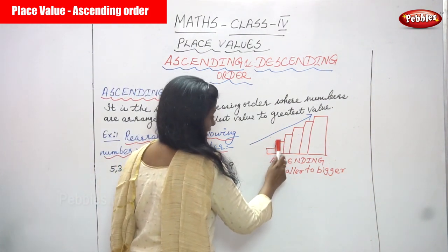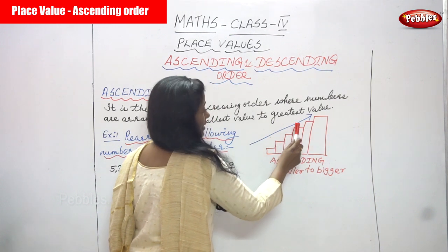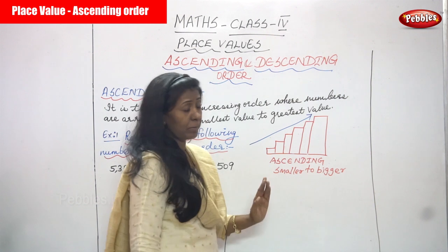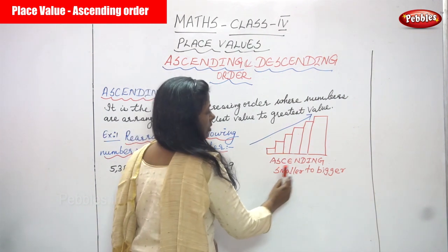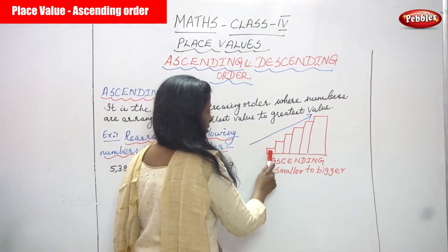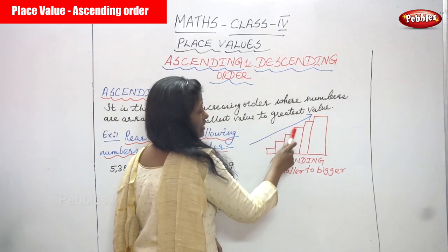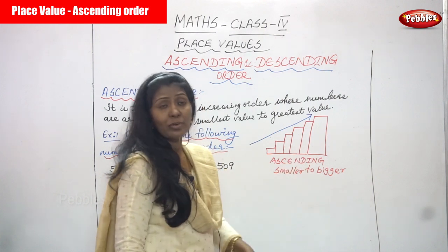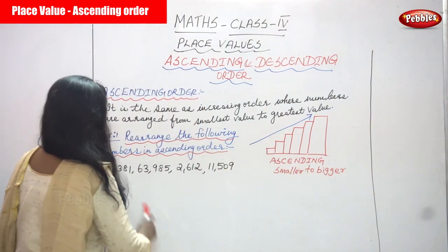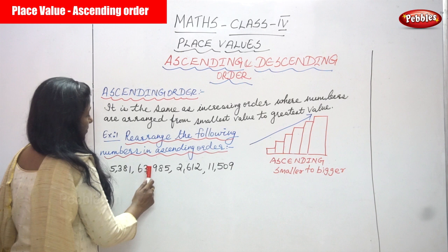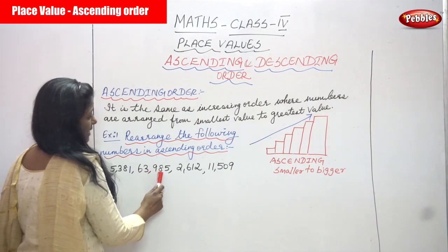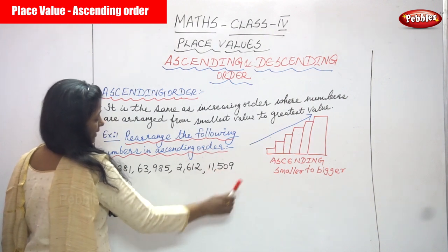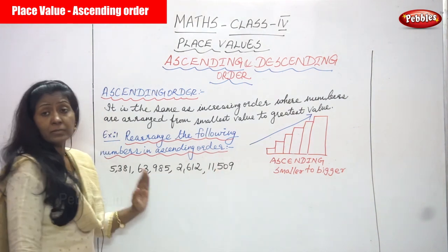This is a diagram of ascending order: from smallest, then next smaller, next smaller, and finally the greatest number. So the order goes: first smallest, second smallest, third smallest, fourth smallest, fifth smallest, and finally the greatest number. Look at the example: five thousand three hundred and eighty-one, sixty-three thousand nine hundred and eighty-five, two thousand six hundred and twelve, and eleven thousand five hundred and nine.